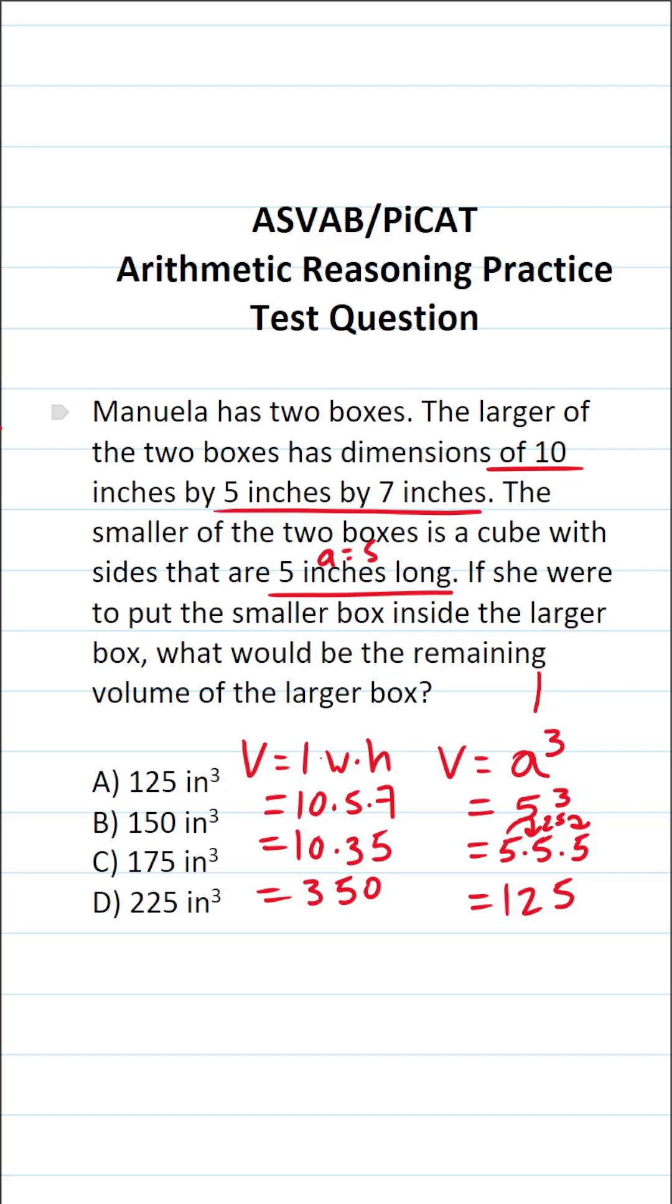So clearly, the cube is the smaller box, and we want to know how much volume is left in the larger box when the smaller box is placed inside the larger box. So that's simply going to be 350 minus 125.